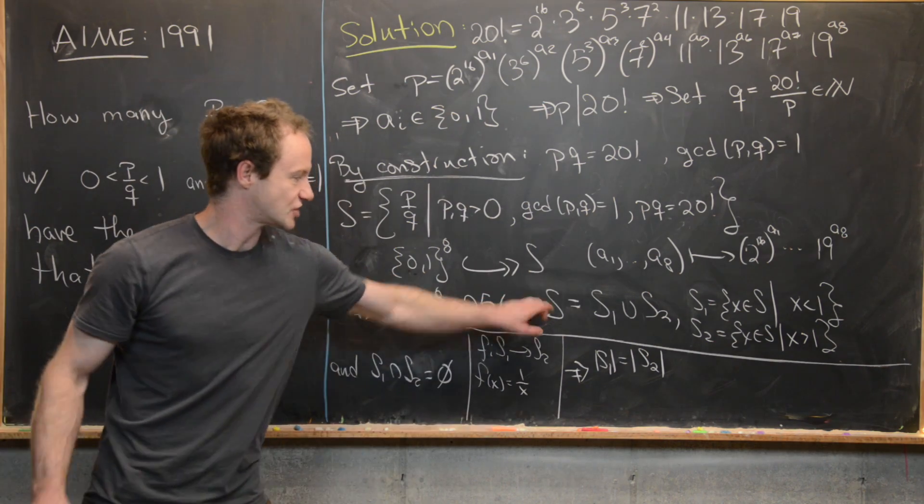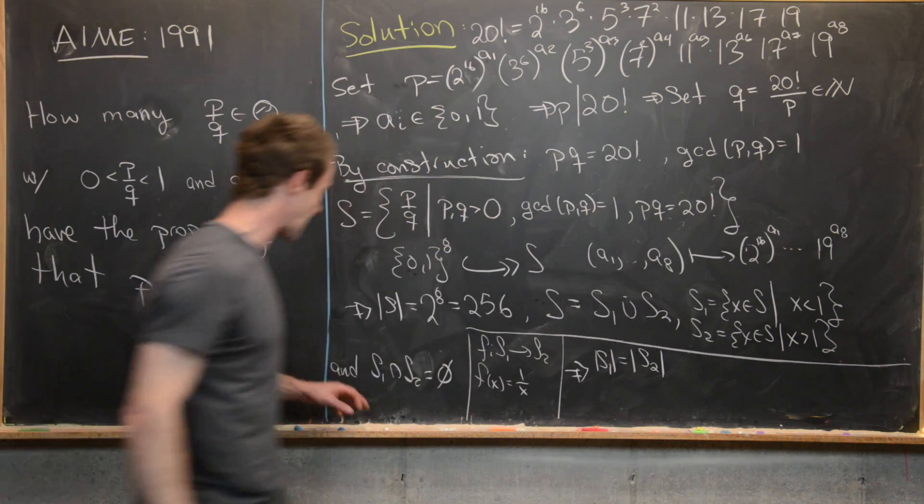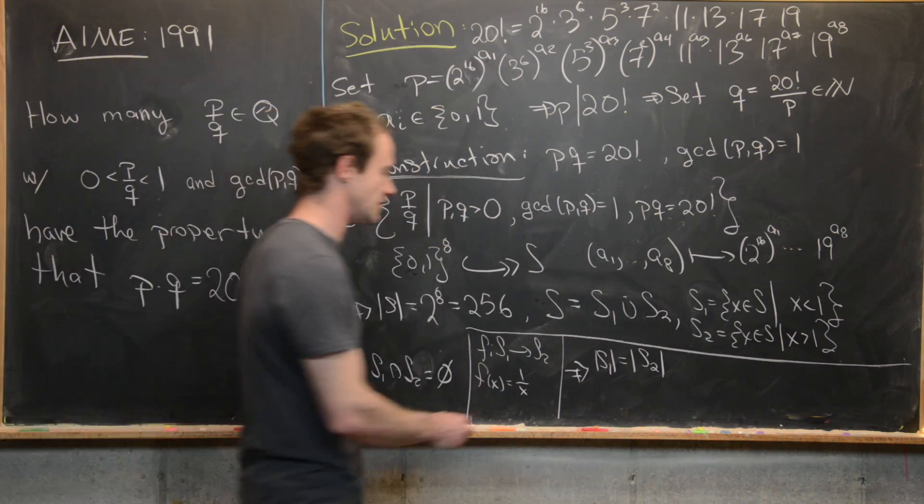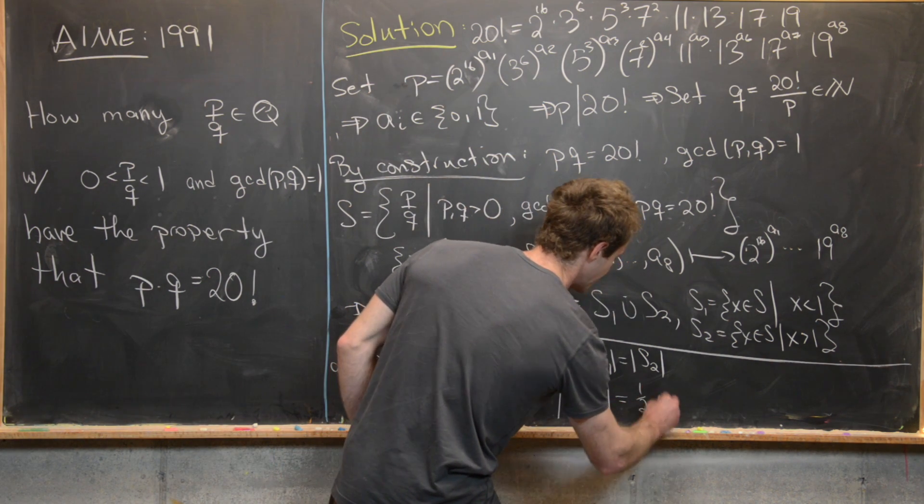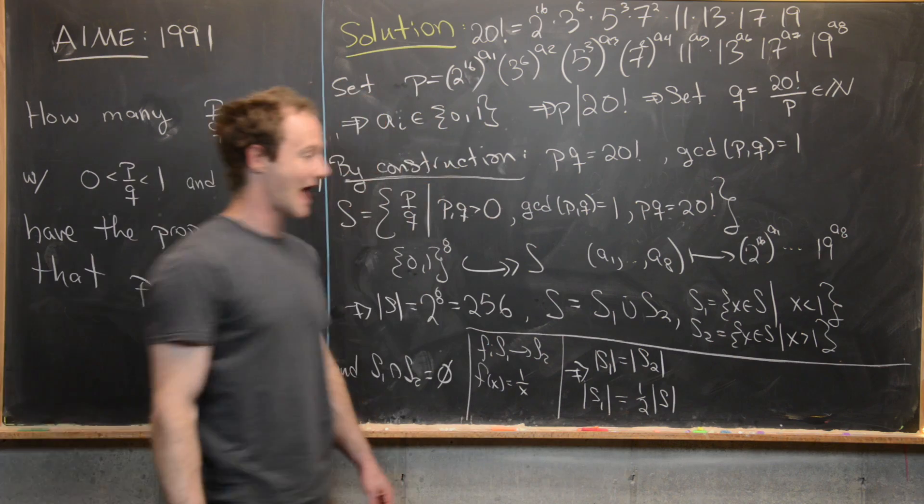But by this equation up here, given the fact that this is a disjoint union, we know that the size of S1 is equal to one half times the size of S.